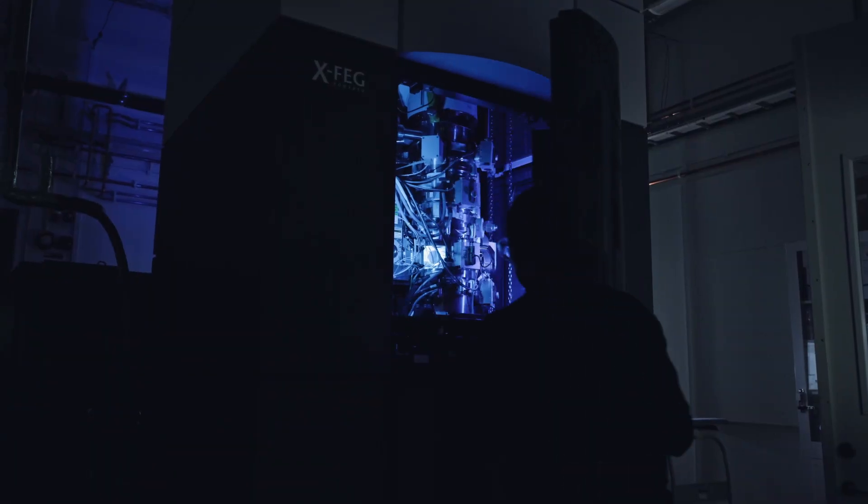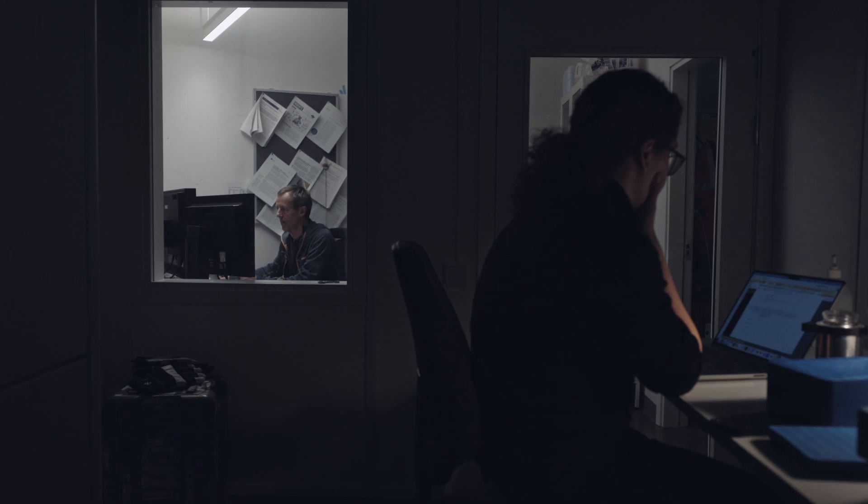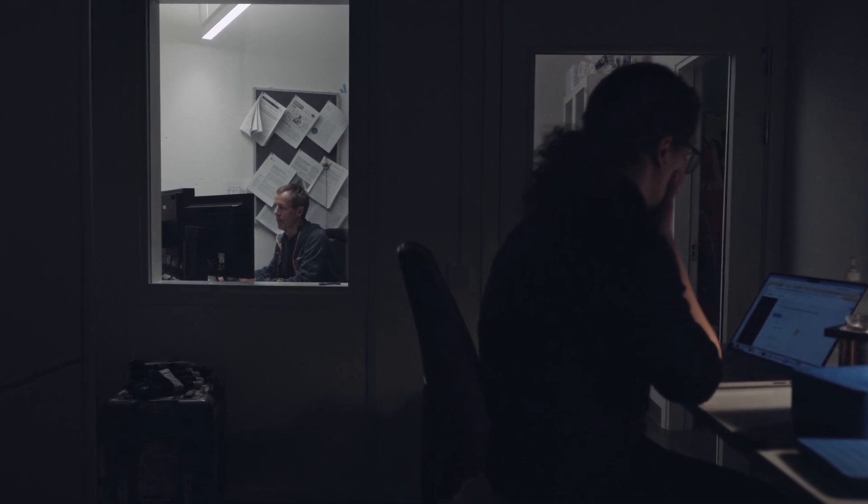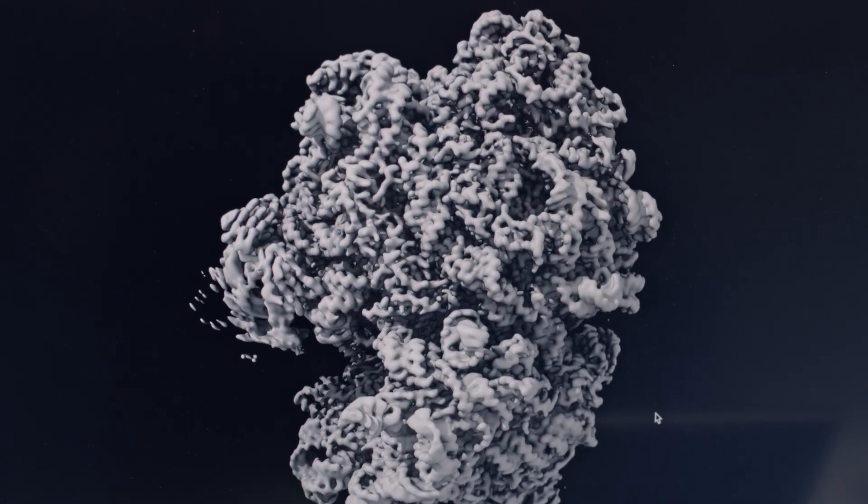Thanks to a new high-tech electron microscope, Gunnar can actually see how amino acid combinations pull together and become a protein. This is a real ribosome. This is what they look like.